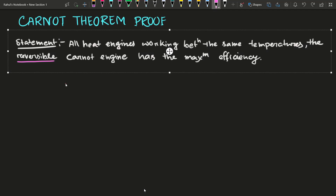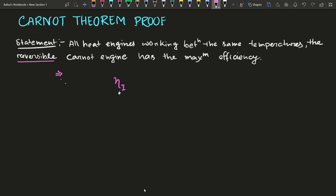Here you can see the statement of Carnot theorem: all heat engines working between the same temperatures, the reversible Carnot engine has the maximum efficiency. That means if we want to mathematically write this, it says that eta_i (efficiency of the irreversible engine) is always less than eta_R (reversible). Let us understand how this happens.